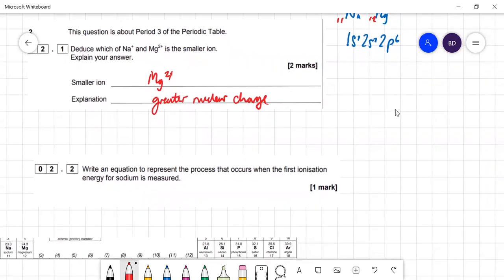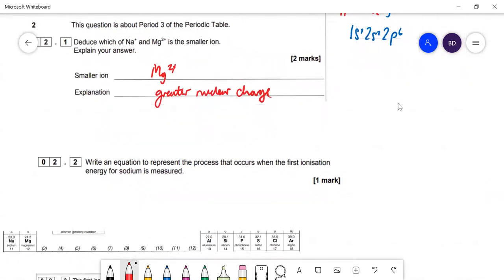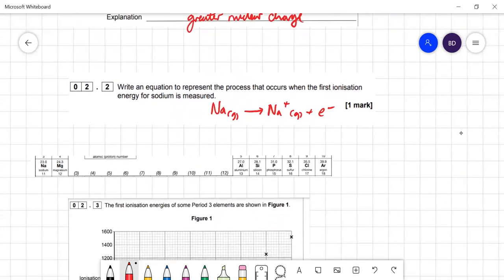An equation to represent the process when the ionization energy for sodium is measured: Na gas goes to Na+ gas plus an electron. You've got to have the state symbols.